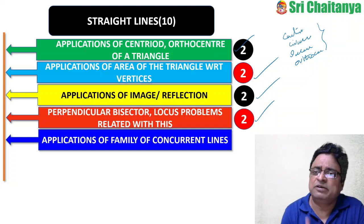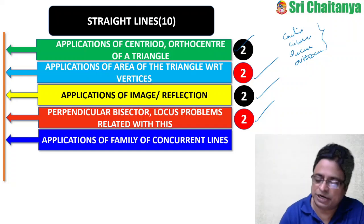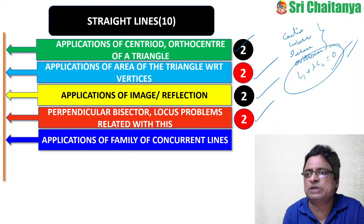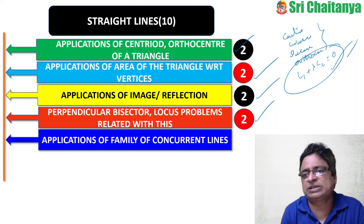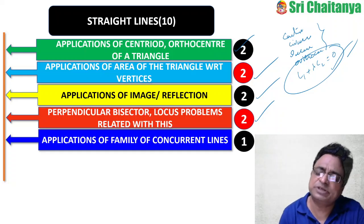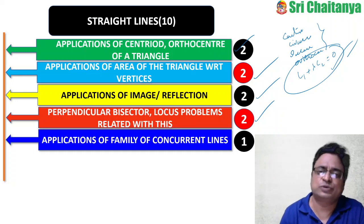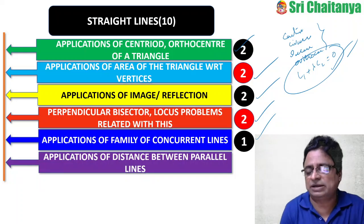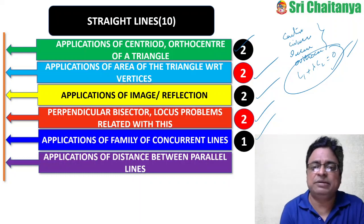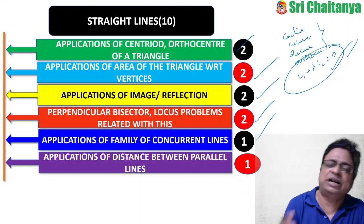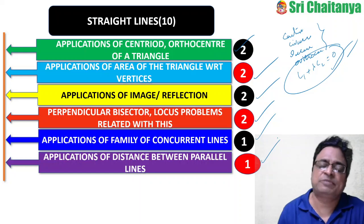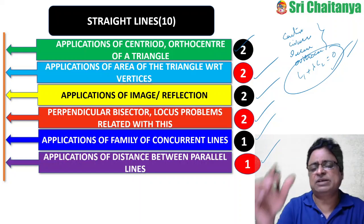Fifth: family of concurrent lines — L1 + λL2 = 0 — this is a favorite area for competitive exams. It represents the set of lines passing through a fixed point. This concept is also useful for curve-versus-line and two different curves scenarios — 1 question was asked. Sixth: distance between parallel lines and distance between a point and a line — 1 question was asked.